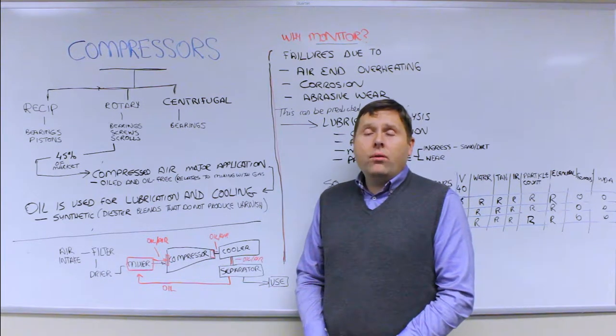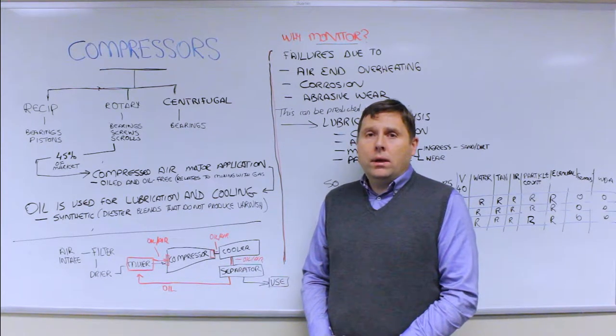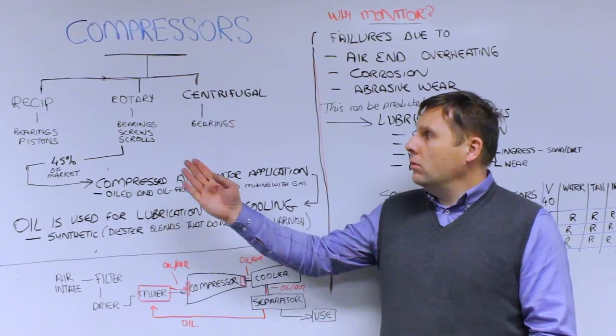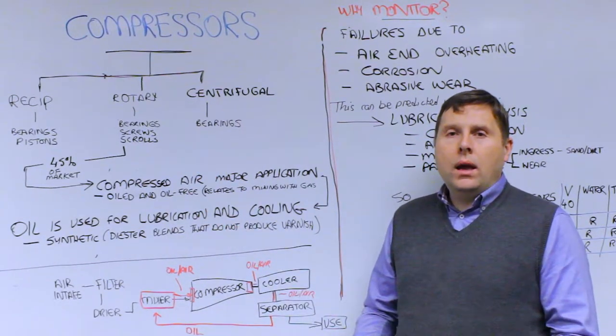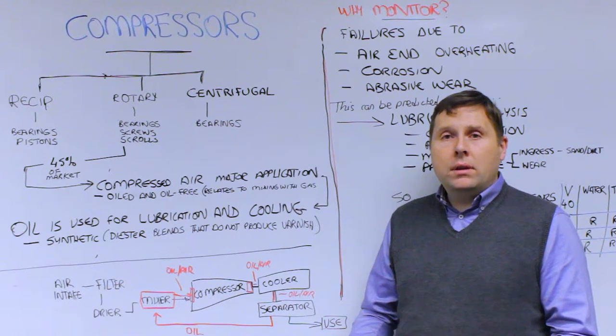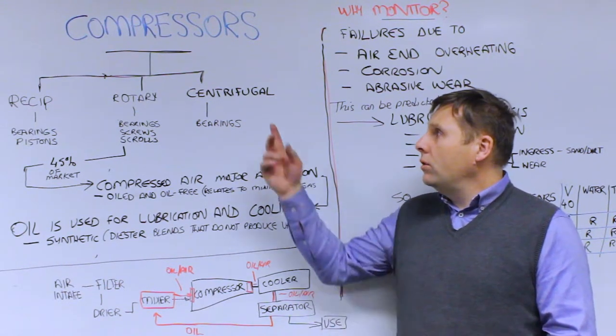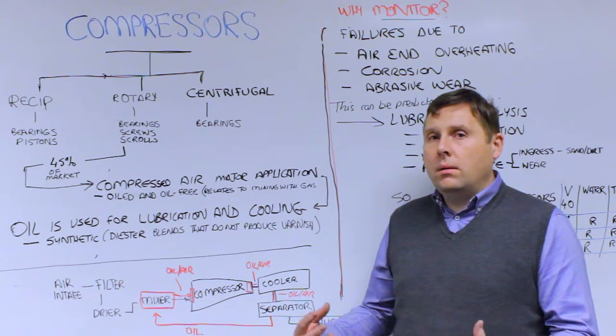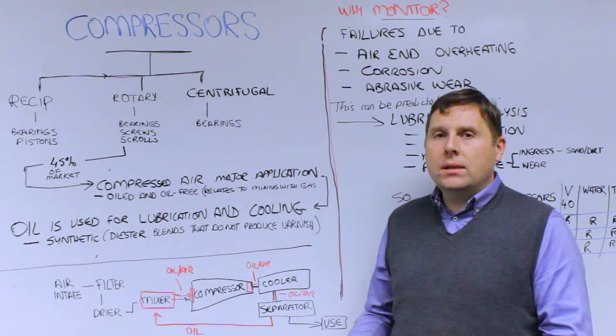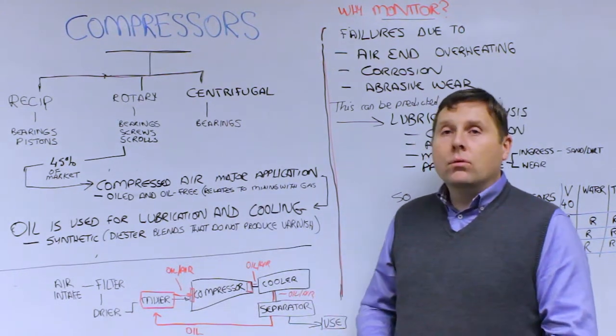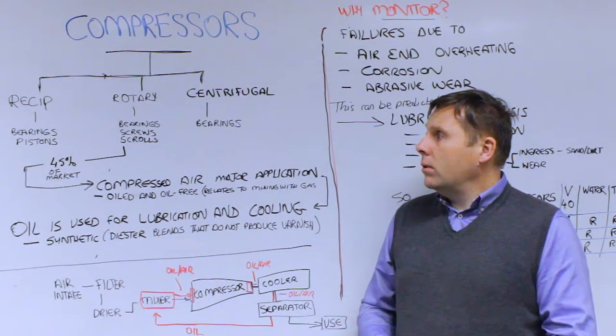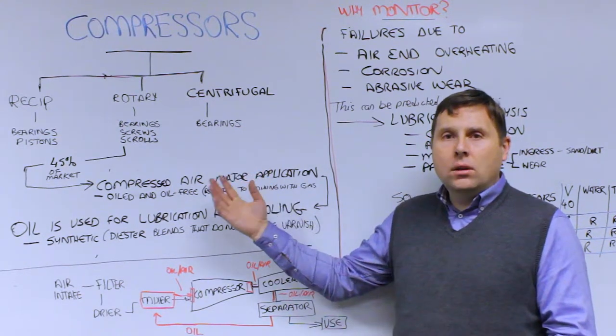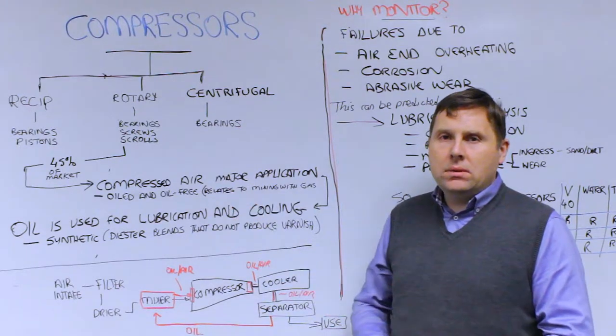There are three major types of compressor out there, and it's all to do with the principle of operation. There are reciprocating systems where the lubricated components are predominantly bearings and pistons. There are centrifugal compressors where predominantly the lubricated components are the bearings, which are sealed from the process. And then you also have rotary compressors. Rotary compressors, the lubricated components are bearings, screws, scrolls, vanes, lobes. There's a series of different systems in there.